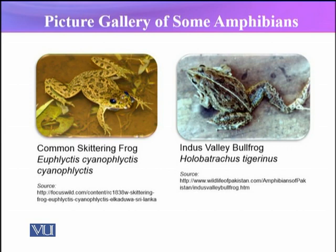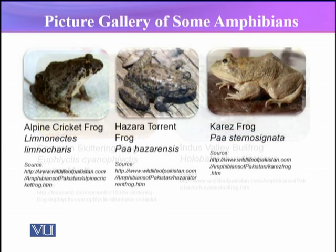Among the common frogs present in this family, the common names include the common scattering frog and the Indus valley bullfrog. These common names especially in this amphibian group represent their habitat, their environment, and their properties or characteristics.